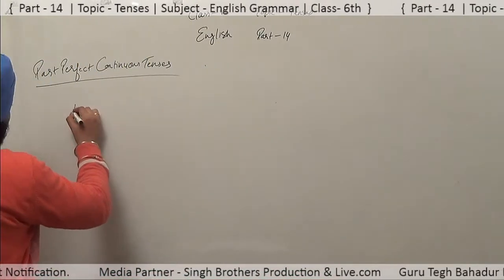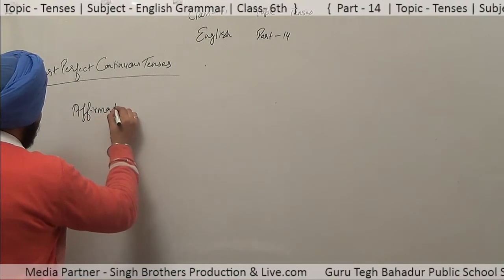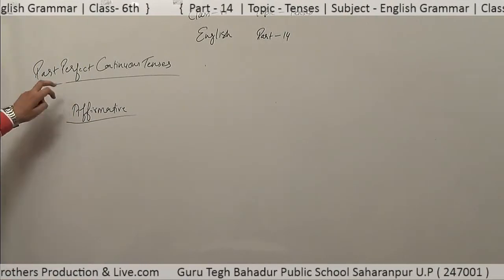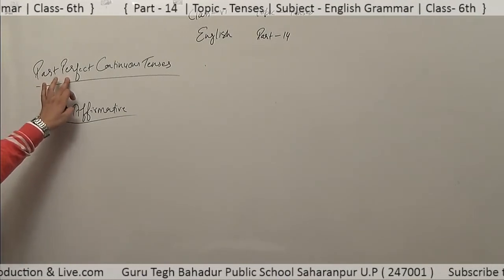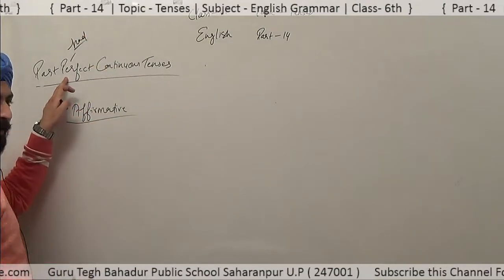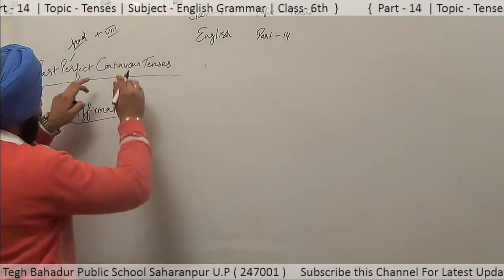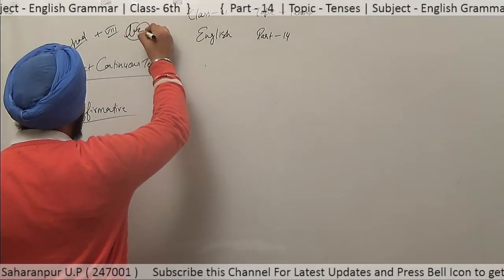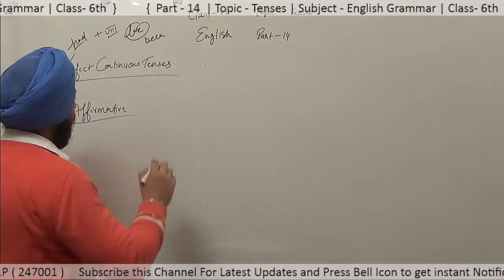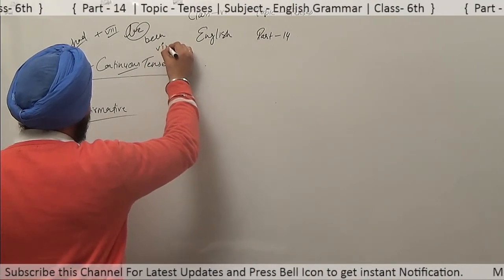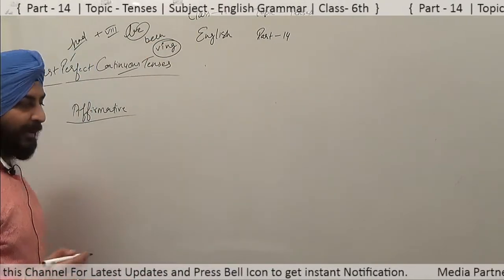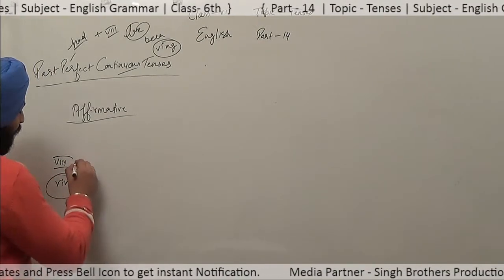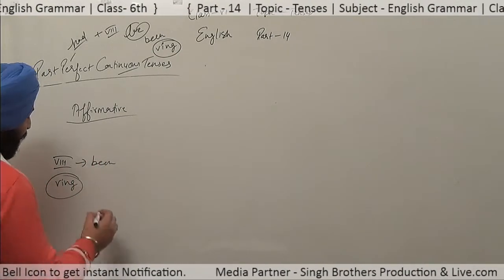So if you look at the rules: in affirmative cases, for making it perfect you have to use the third form. We have read in past perfect that we use the third form with 'being.' So in this case, we will use the third form of 'be,' which converts into 'been.' And for the continuous part, the verb will be added in the form of -ing, so simply verb plus -ing.